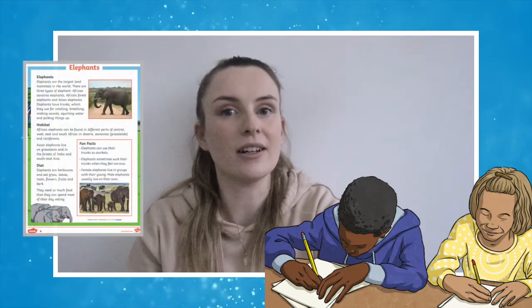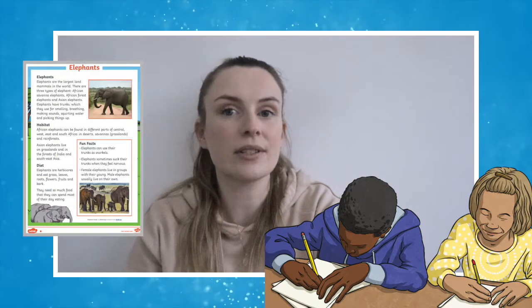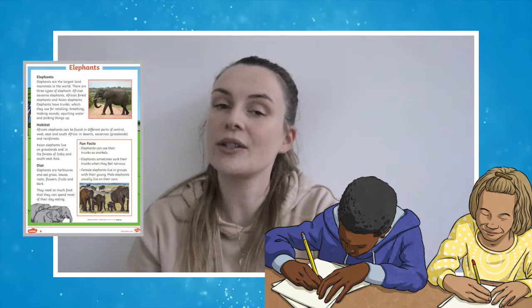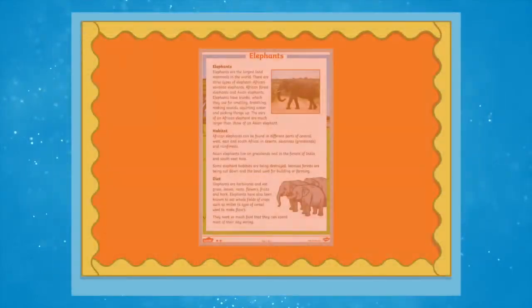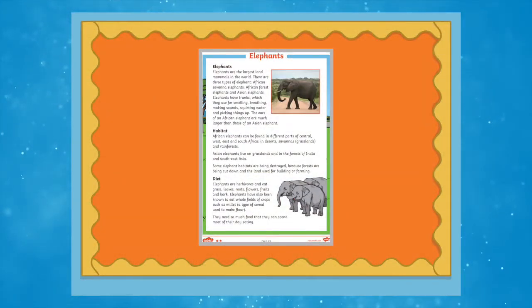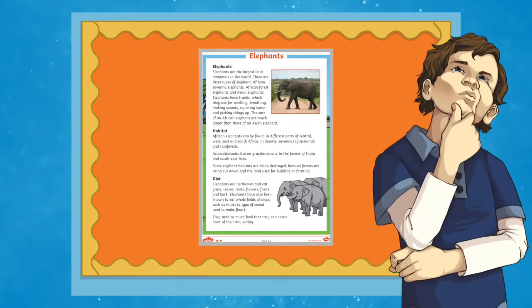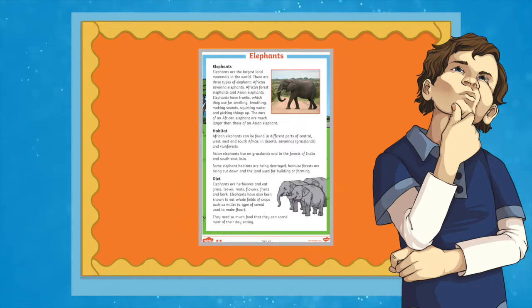You can use the animal fact files as examples and discuss the features of the text with the children. You can then hang up a labelled copy of the animal fact file within the classroom. Children can then refer back to this when they're writing their very own fact files.